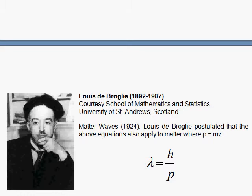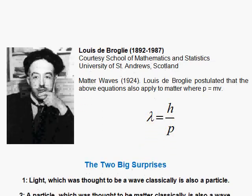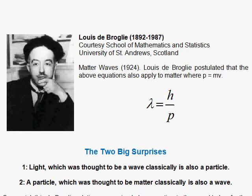De Broglie comes along and says, I think that applies to matter also. Matter has momentum, like MV, just plug it in, get a wavelength. That's a big surprise. In fact, here we have two big surprises now. One, light, which was thought to be a wave classically, is also a particle. And now a particle, which was thought to be matter classically, is also a wave, with De Broglie's idea.